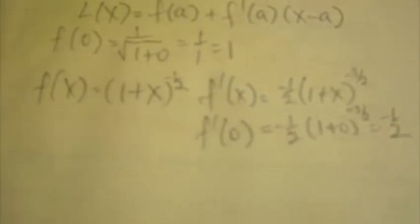So this now gives us our linearization. L(x) is equal to 1, which is our f(0). Let's put it down so you can see it.